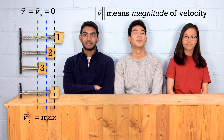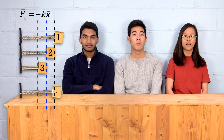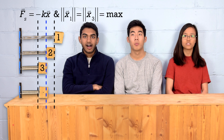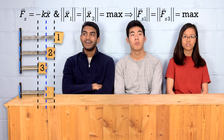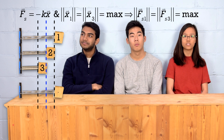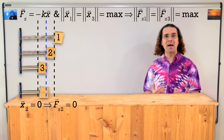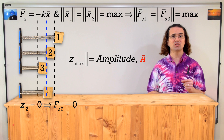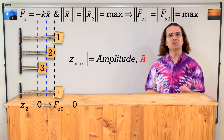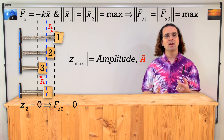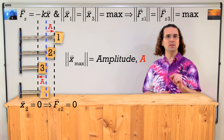But first, Olivia, what do we know about the force of the spring? Well, according to Hooke's law, the force of the spring equals the negative of k, which is the spring constant, times x, the displacement from equilibrium position. At positions one and three, the displacement from equilibrium position has its maximum magnitude. Therefore, the magnitude of the spring force is at a maximum at positions one and three. And at position two, the displacement from equilibrium position is zero. Therefore, the force of the spring is zero at position two as well. The magnitude of the maximum displacement from equilibrium position is called the amplitude, which means when the mass is at positions one and three, the magnitude of its displacement from rest position equals the amplitude.